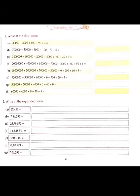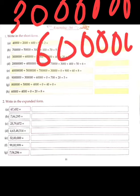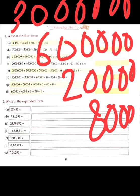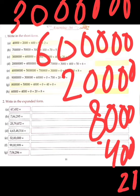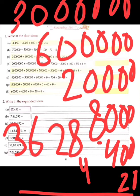Next is: thirty lakh plus six lakh, plus twenty thousand, plus eight thousand, plus four hundred, plus twenty, and one. So the correct answer is 36,28,421.